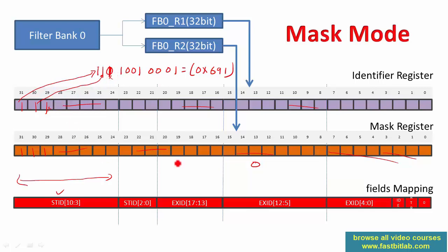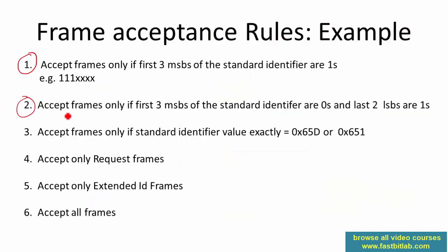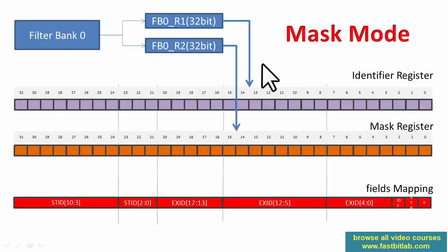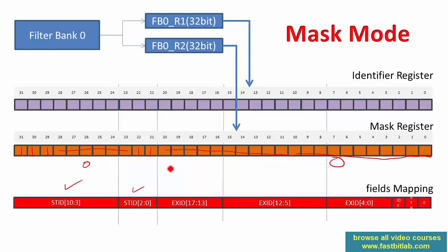Now let's take another example: accept frames only if the first three MSBs of the standard identifier are zeros and the last two LSBs are ones. To implement this, I make the three MSB positions one in the mask register and also make the last two LSB positions one. The rest are set to zero — those fields are not checked. In the identifier register, I keep zero zero zero for the MSBs (that's what I expect) and one one for the LSBs; the remaining bits are don't-care.